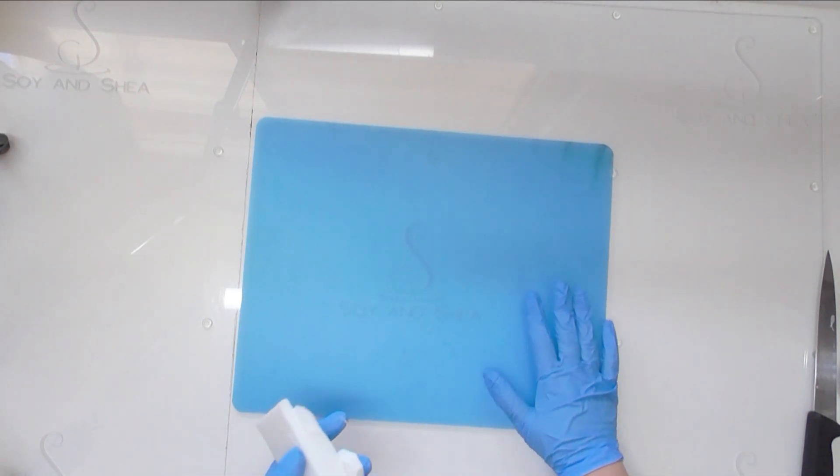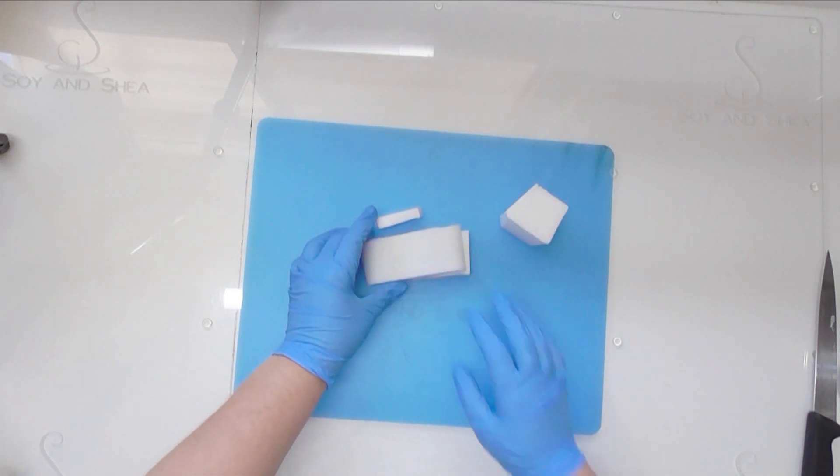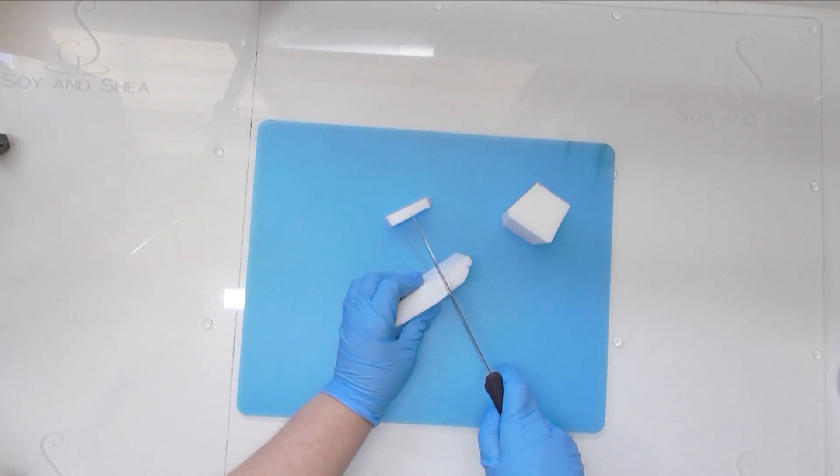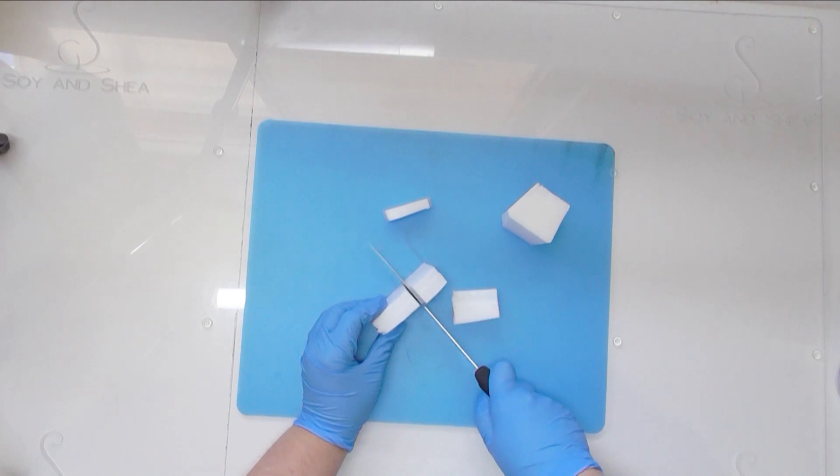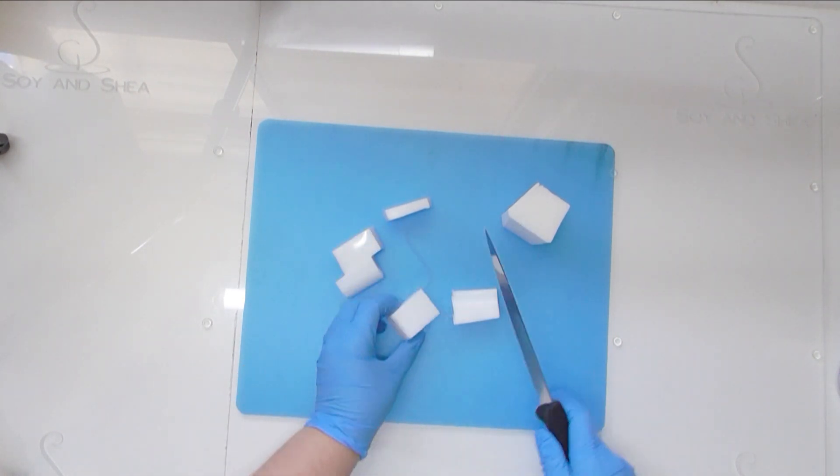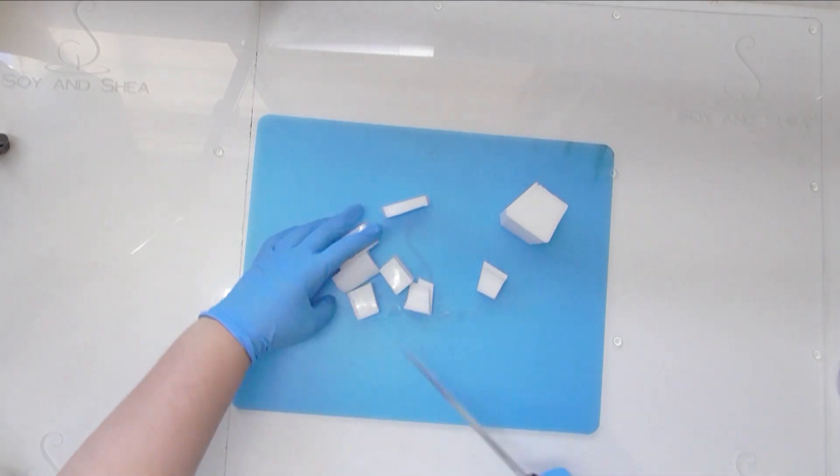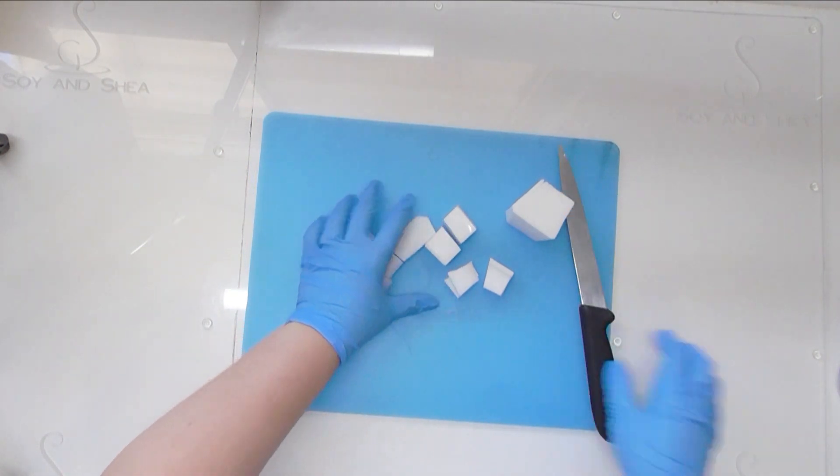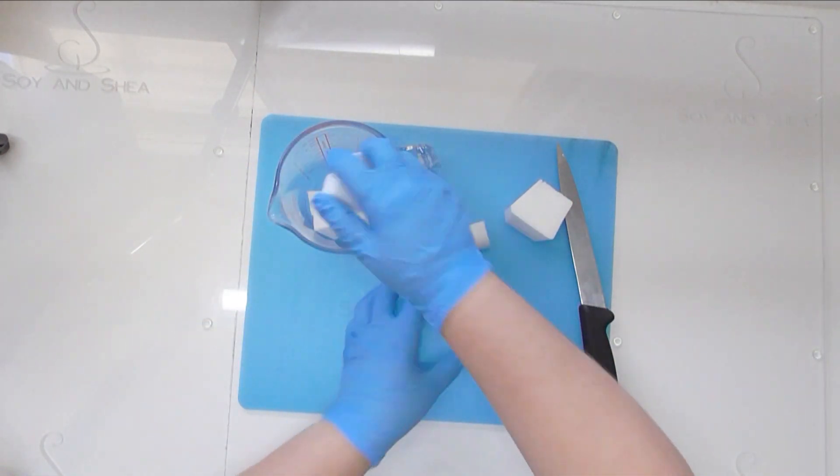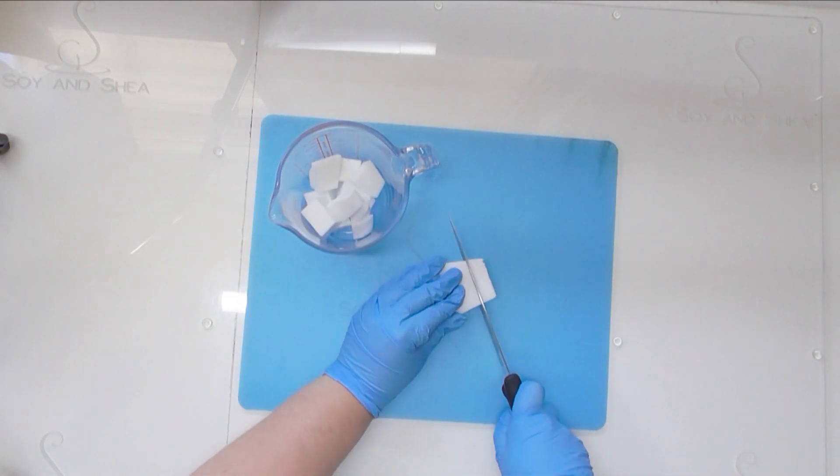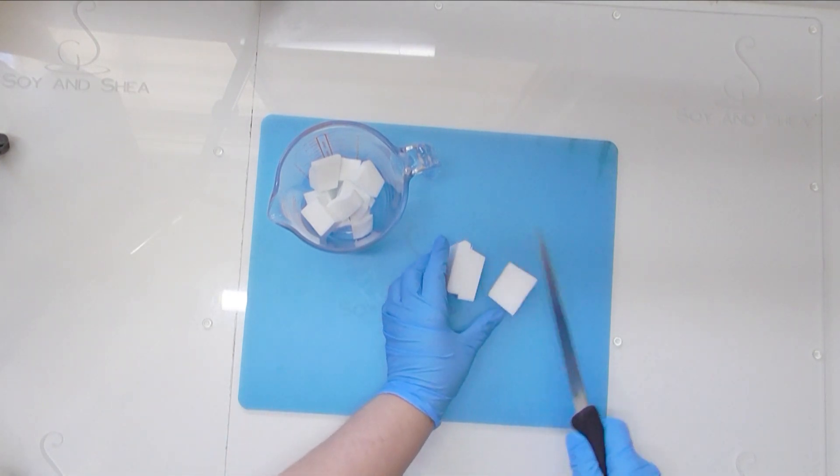Alright, so let's get started with the next lot of little embeds for the soap. What I've got here is some of the white no sweat melt and pour by Stevenson. I'm just going to chop it up into some smaller chunks here. I've got about 200 grams worth. I'm hoping I've got enough. If not we can always melt down some more. I'm going to pop it into my little Pyrex jug here, then I'm going to put it into the microwave and melt it down very gently in 20 to 30 second bursts until it is just melted.